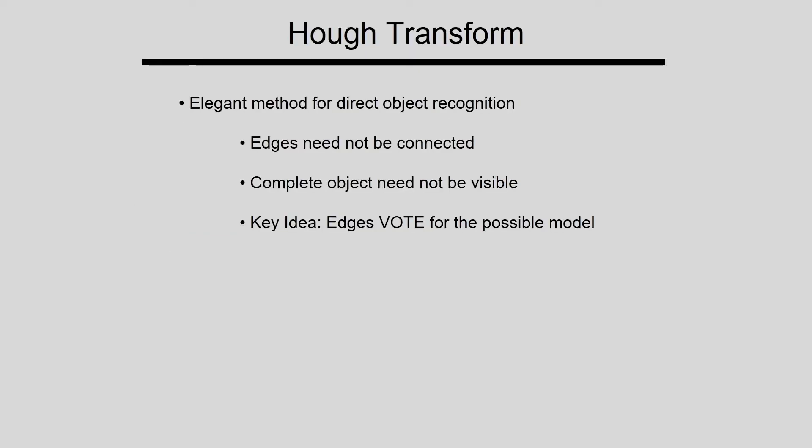The Hough transform is a very important technique to detect lines or circles present in an image. Edges need not be connected in the case of the Hough transform, and the complete object need not be visible. The key idea is voting — we vote to find possible models.